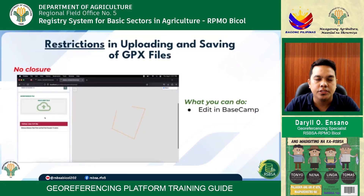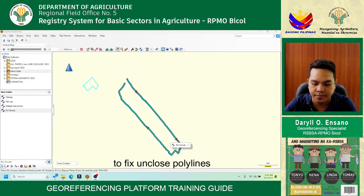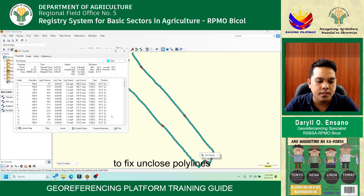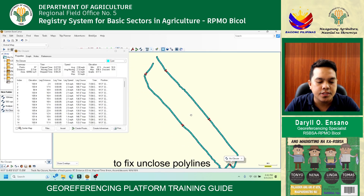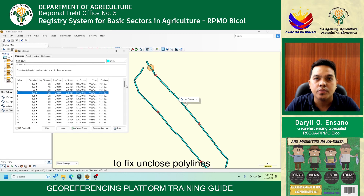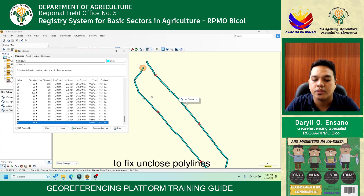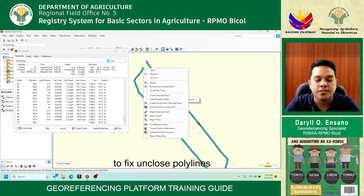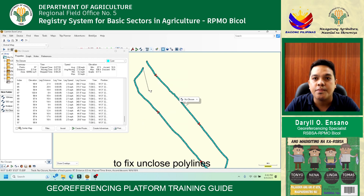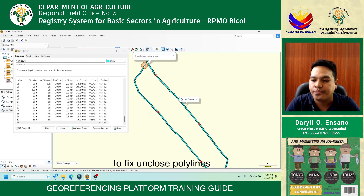For unclosed polylines, JPEX files also require editing and fixing in Garmin Basecamp. To fix unclosed polylines: First, select and double-click the JPEX file — it will prompt the attribute tables in the JPEX track. Second, determine where to add points. Third, in the attribute table, right-click the point where you want to insert a new point. Fourth, right-click the point then select 'Insert into Tracks' — it will then add a new point at the desired location.